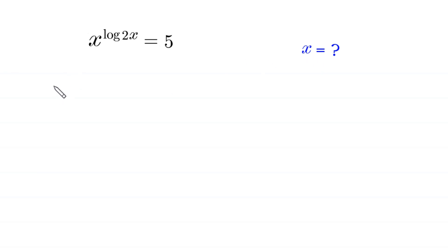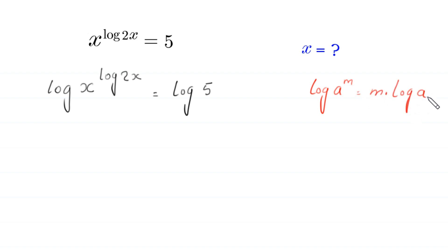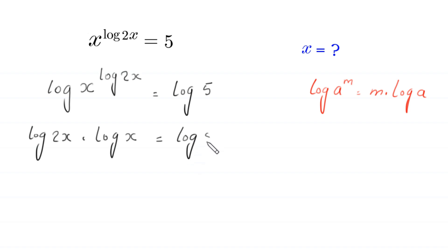First, we take a log of both sides. This will become log of x to the power log of 2 times x, is equal to log of 5. By using the log property — log of a to the power m is equal to m times log of a — this will become log of 2x times log of x is equal to log of 5.